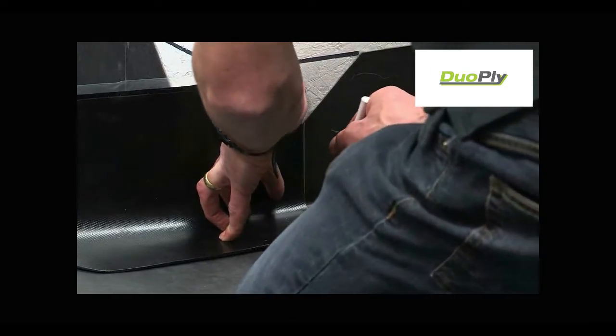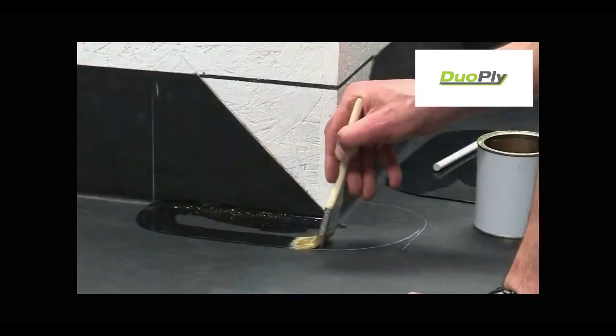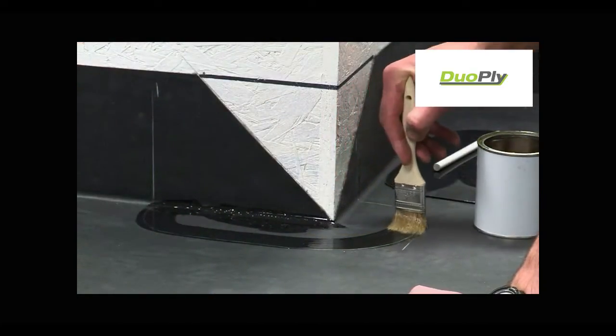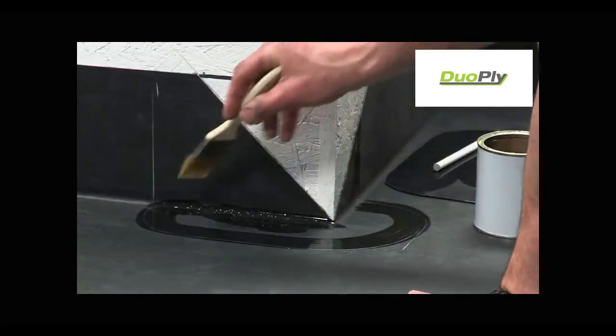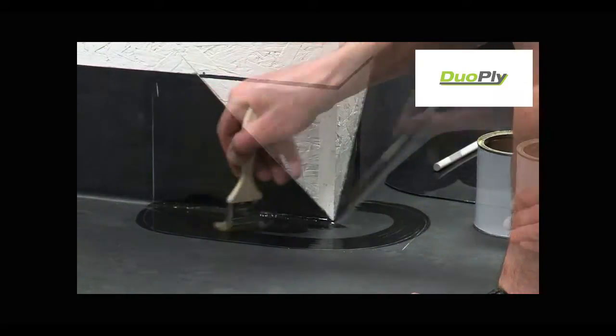Mark the target area for the primer. On dusted membranes, primer must be applied with a scrubbing pad. If the membrane is factory pre-cleaned, a brush may be used.